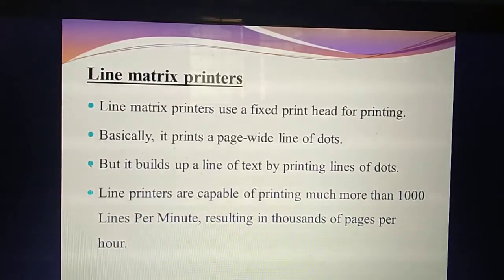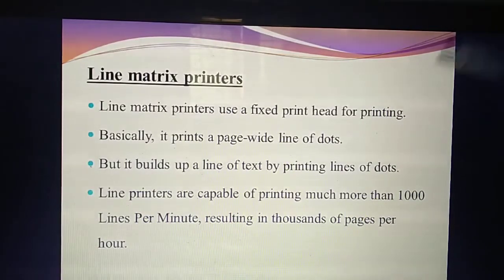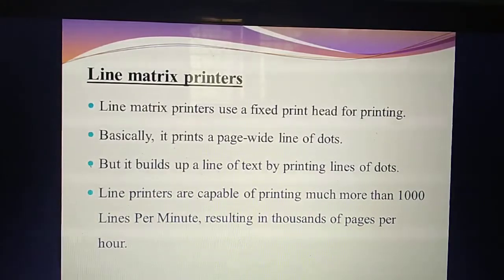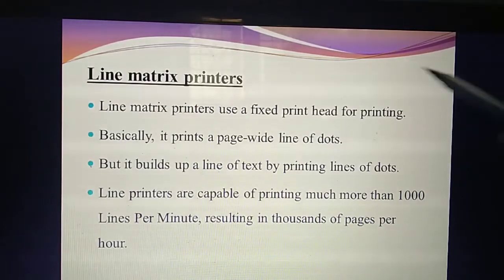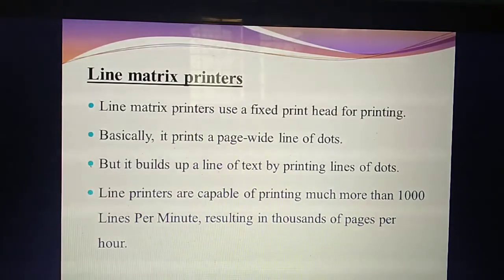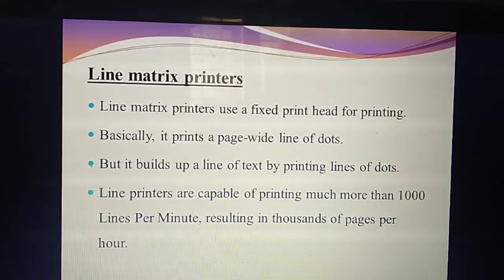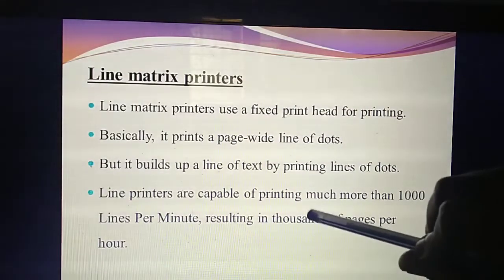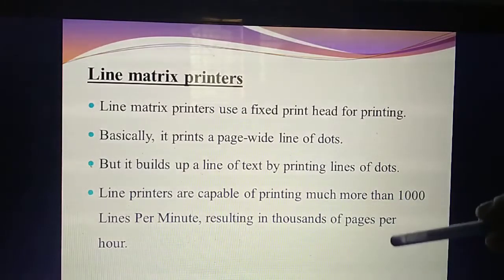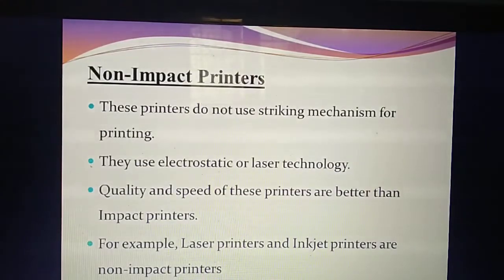The differences between dot matrix and line matrix: dot matrix has fixed number of wires or pins; line matrix has a fixed print head for printing. Both print by means of dots. Dot matrix prints only one line at a time; line matrix prints one thousand lines per minute and one thousand pages per hour. Impact printers — two types studied: dot matrix printer and line matrix printer.